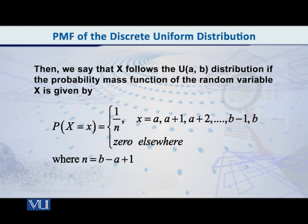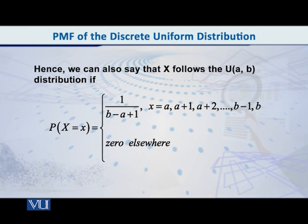Students, if n is equal to b minus a plus 1, then it is obvious that we can write the pmf as follows as well. That p of x is equal to 1 over b minus a plus 1, where x is equal to a, a plus 1, a plus 2, so on and so on, b minus 1 and b. And, of course, p of x is equal to 0 elsewhere.